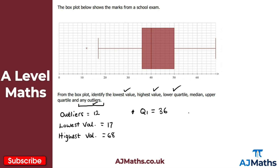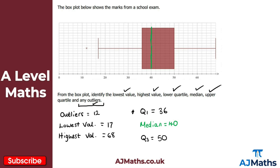The median is the dark line in the middle of the box. I'll highlight it in a different colour — that median line is at 40, so the median, or Q2, is 40. The upper quartile Q3 is the rightmost line of the rectangle, which is 50. That gives us all the values and completes the solution to the final question, bringing us to the end of this video on box plots.